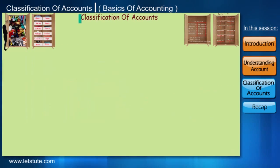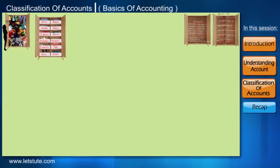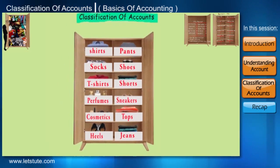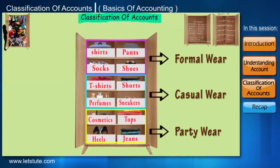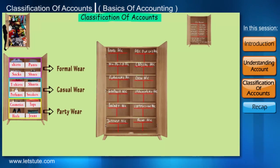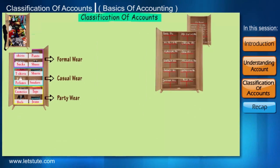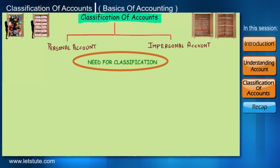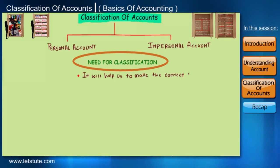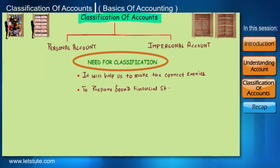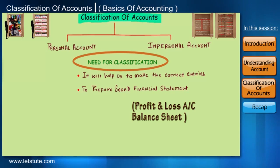Having understood this, let's move on to the classification of accounts. Just like we maintain different drawers in a wardrobe classified into different heads, in accountancy we classify different accounts into two types: personal and impersonal accounts. Well-classified accounts help us make correct entries and prepare sound financial statements — that is, the profit and loss statement and the balance sheet.